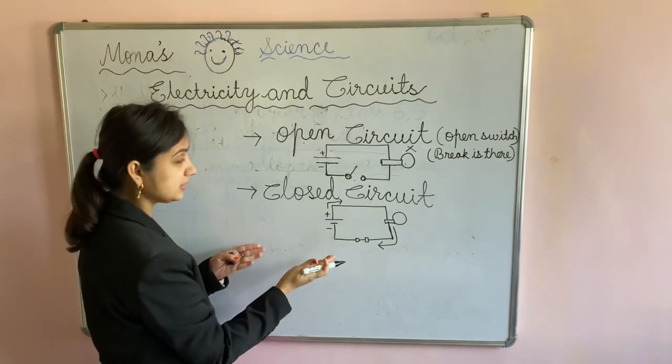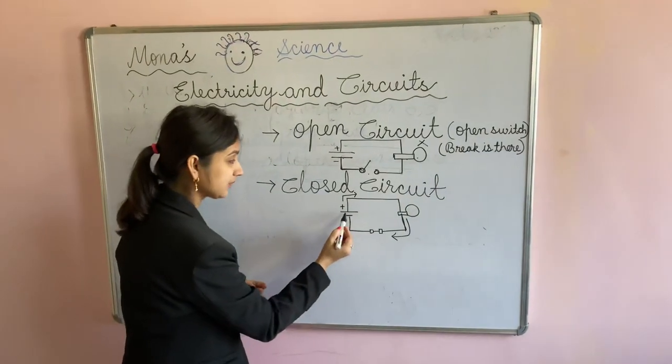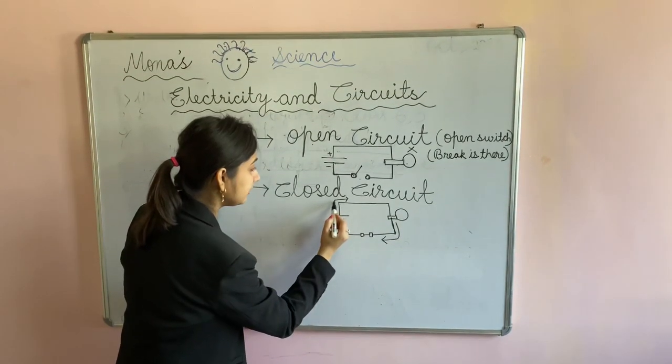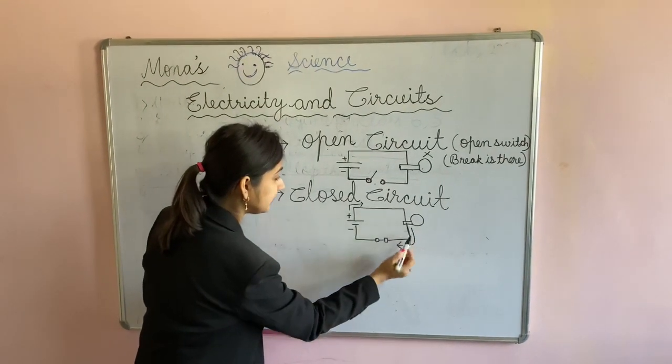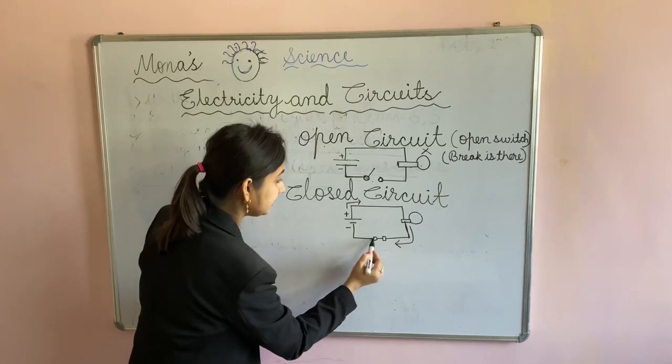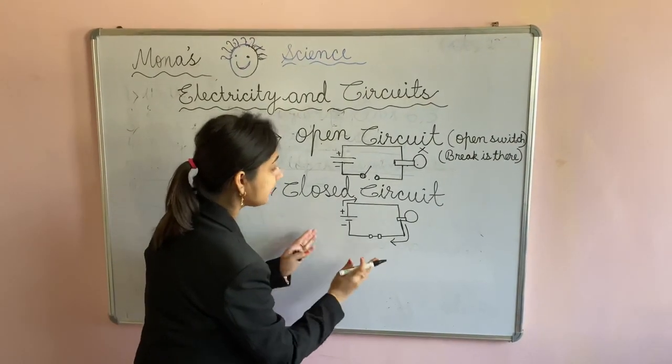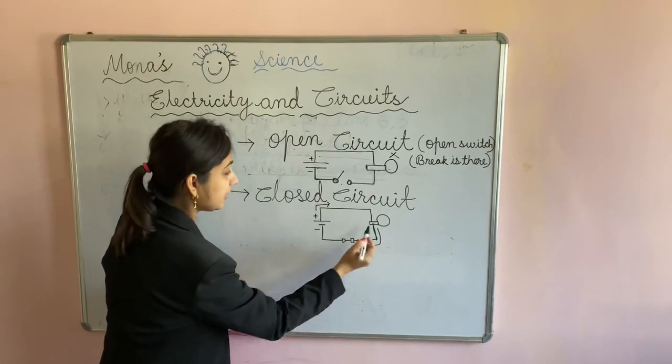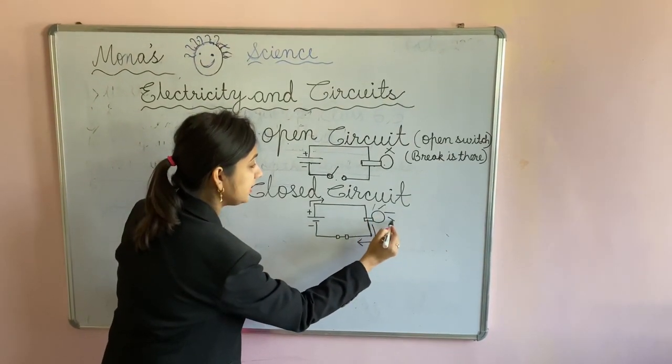But in the other case, in closed circuit, you can see this is the battery. Current is flowing from positive terminal to negative terminal here, and the switch is closed. Here there is no break. This is the closed circuit and here the bulb will glow.